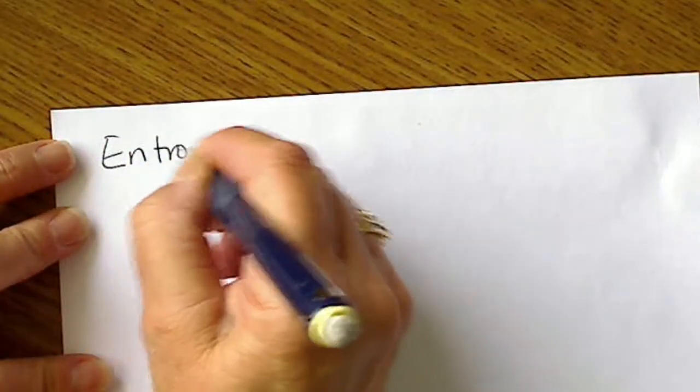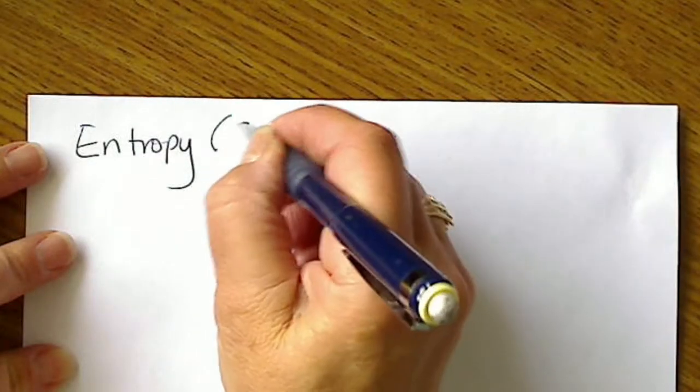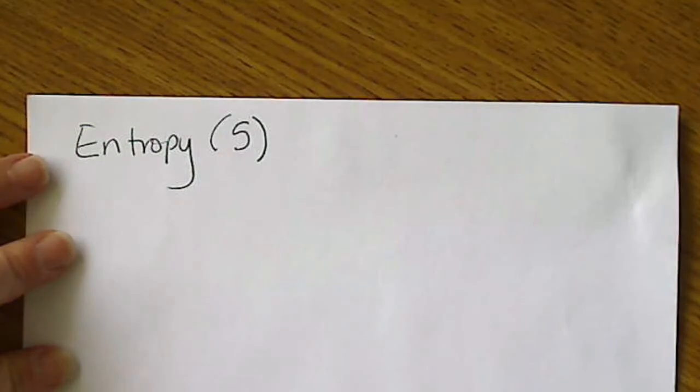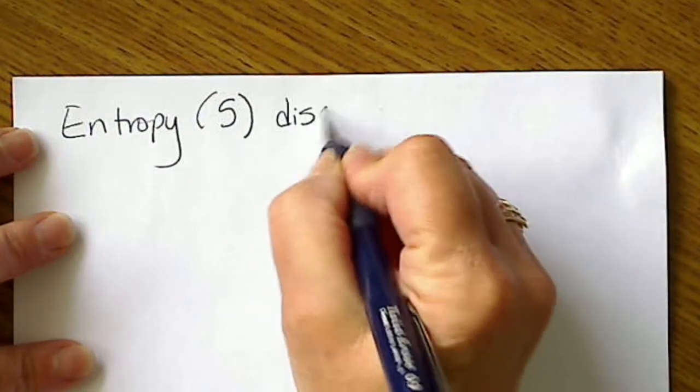And entropy is another thermodynamic term. In entropy we write with a capital S. That's another state function, which means it's path independent. And entropy means disorder.